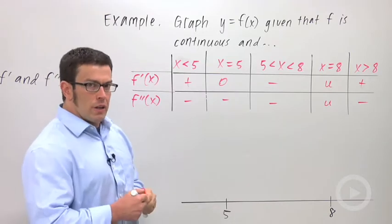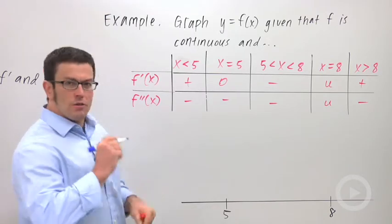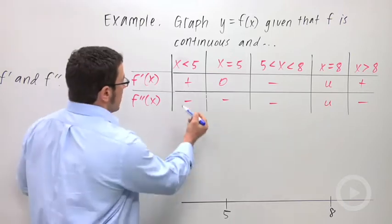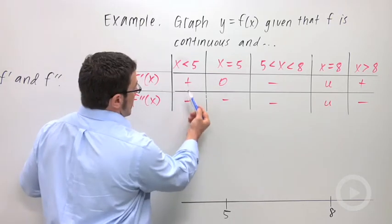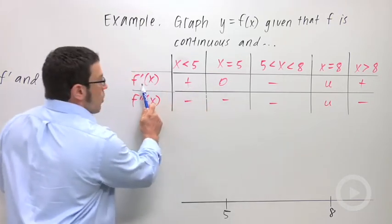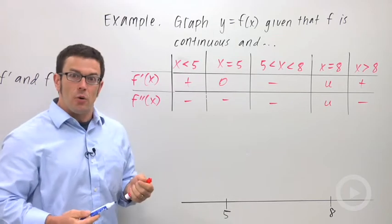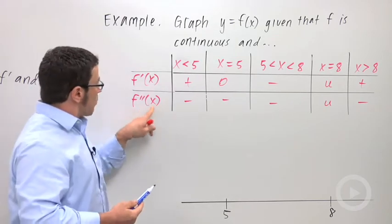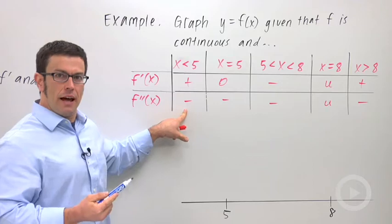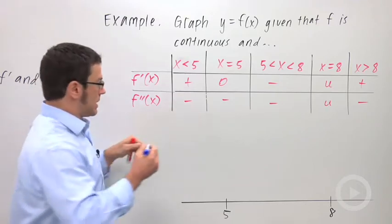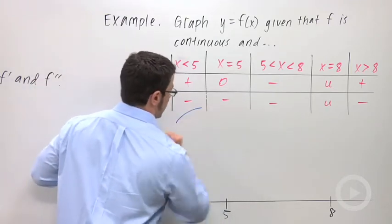I'm just going to go through this table really quickly and draw a little shape for each of these intervals. For example, x less than 5. If f prime is positive, that means that f is increasing. And if f double prime is negative, it's concave down. So I'm going to draw a little curve that's increasing and concave down, something like that.